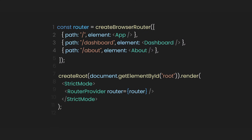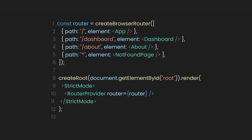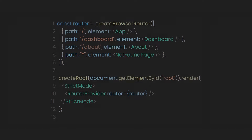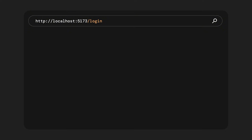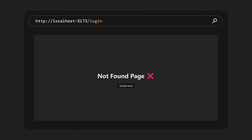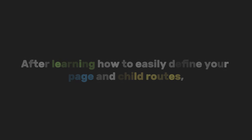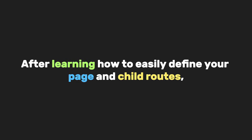After designing our NotFound page, let's return to the main page setup. Let's add another object where the path is defined as an asterisk, and the element is set to the NotFound page component. This path effectively handles any URL that isn't explicitly defined in our createBrowserRouter setup, directing users to our custom NotFound page. If we navigate to a login page that isn't specified, we'll see the NotFound page we've designed, which helps us redirect back to the homepage.